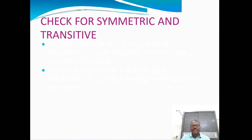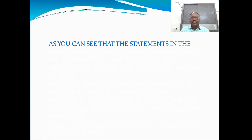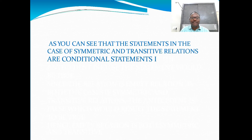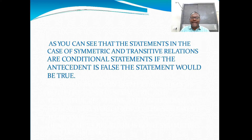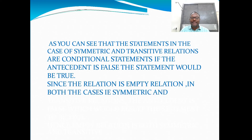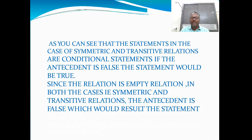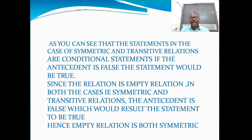Now let us check for symmetric and transitive relations. As you can see, the statements for symmetric and transitive relations are conditional statements. If the antecedent is false, then the statement would be true. Since the relation is the empty relation, in both cases — symmetric and transitive — the antecedent is false, which results in the statement being true.